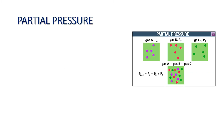First, let's talk about partial pressure. As you can see in our illustration, we have three different gases: gas A, gas B, and gas C. Let's say they are in a container, wherein each gas is in a container where gas A is exerting a pressure, we call it pressure A, and then the same goes for gases B and C.